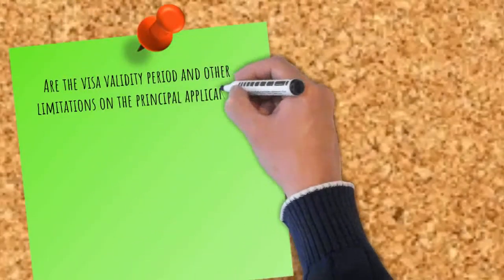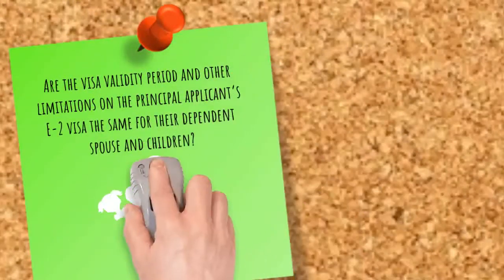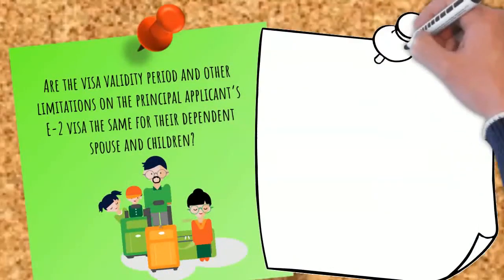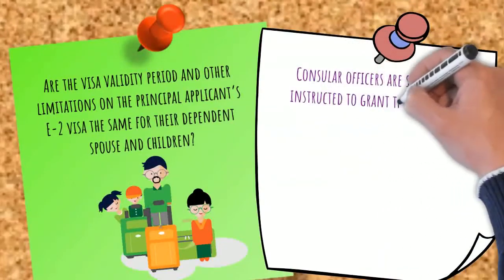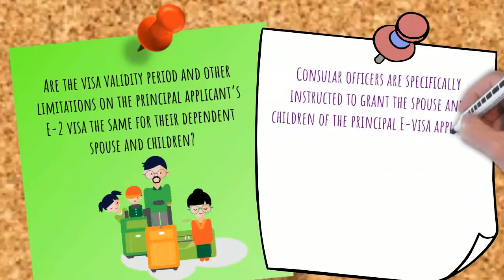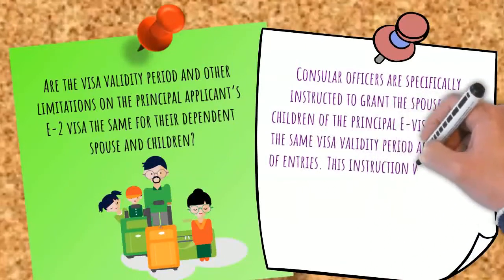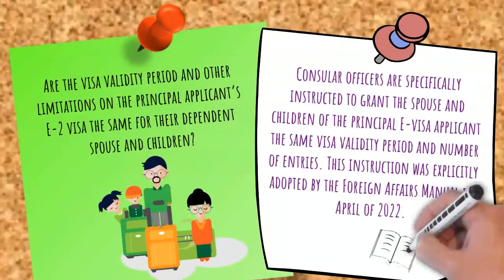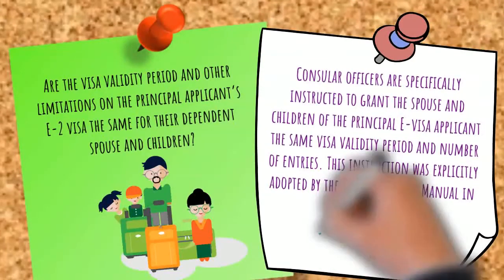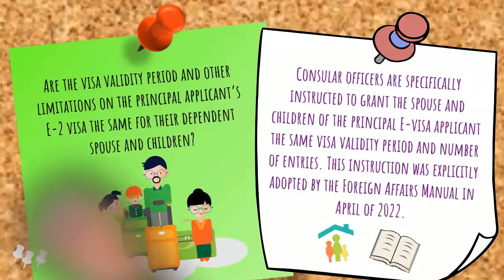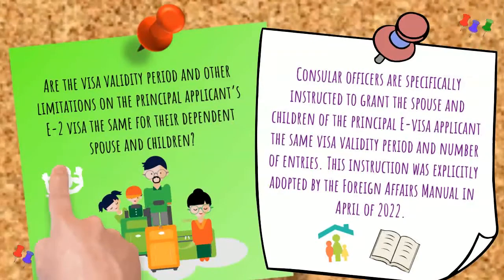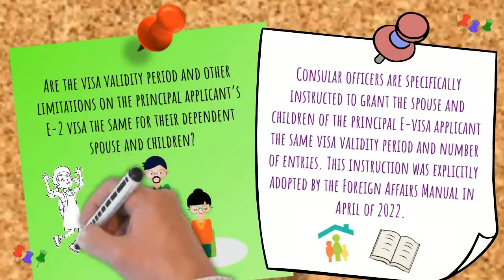Are the visa validity period and other limitations on the principal applicant's E2 visa the same for their dependent spouse and children? Consular officers are specifically instructed to grant the spouse and children of the principal E visa applicant the same visa validity period and number of entries. This instruction was explicitly adopted by the Foreign Affairs Manual in April of 2022. The visas issued to the spouse and children should also have the same limitations that apply to the principal E2 applicant's visa. One exception to this general rule is when the principal has changed status through USCIS and has not been issued a visa.